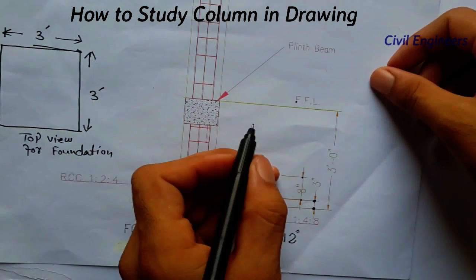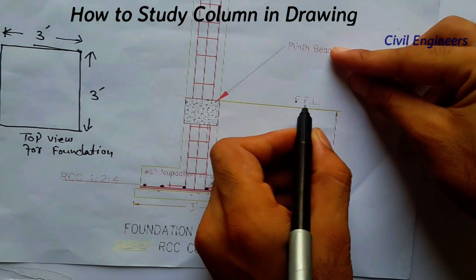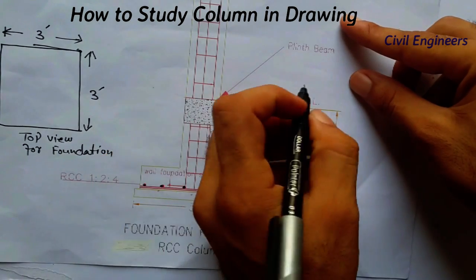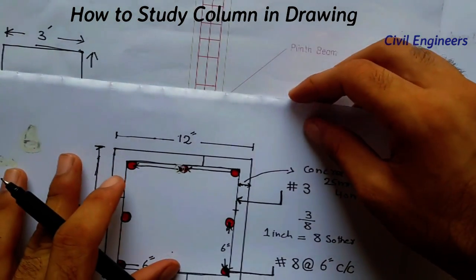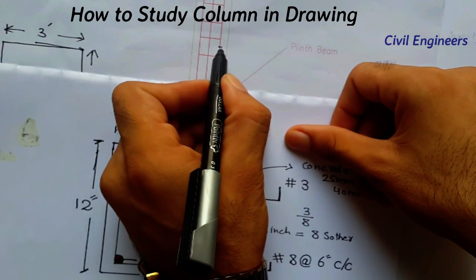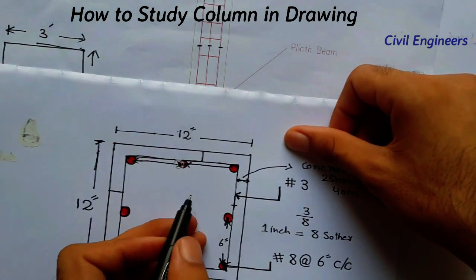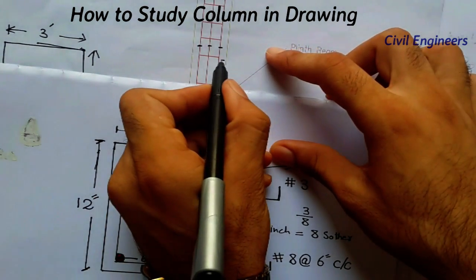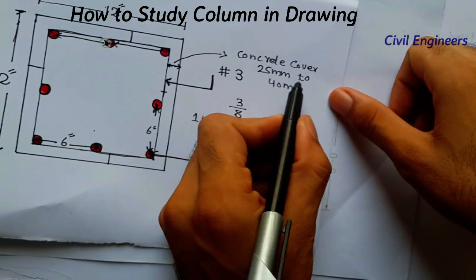FFL stands for Finished Floor Level — this is the floor in this section, which is also called the plinth beam. Here we have steels: 1, 2, and 3. In cross-section we can see 3 numbers of steel. The concrete cover here is 40 mm.